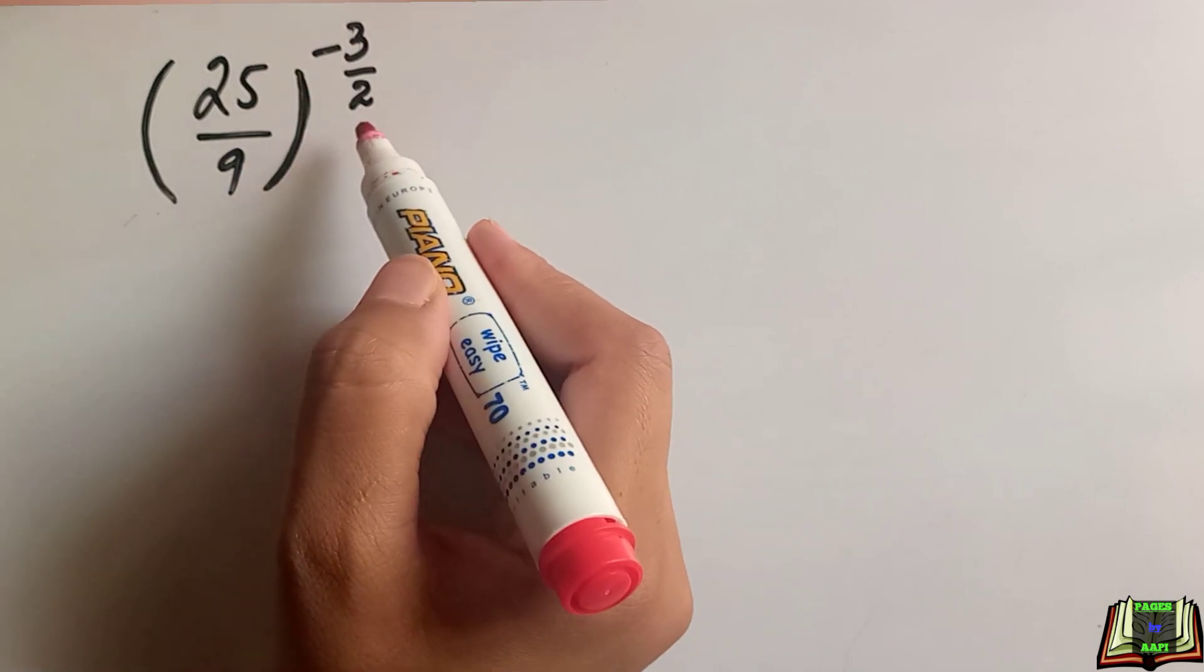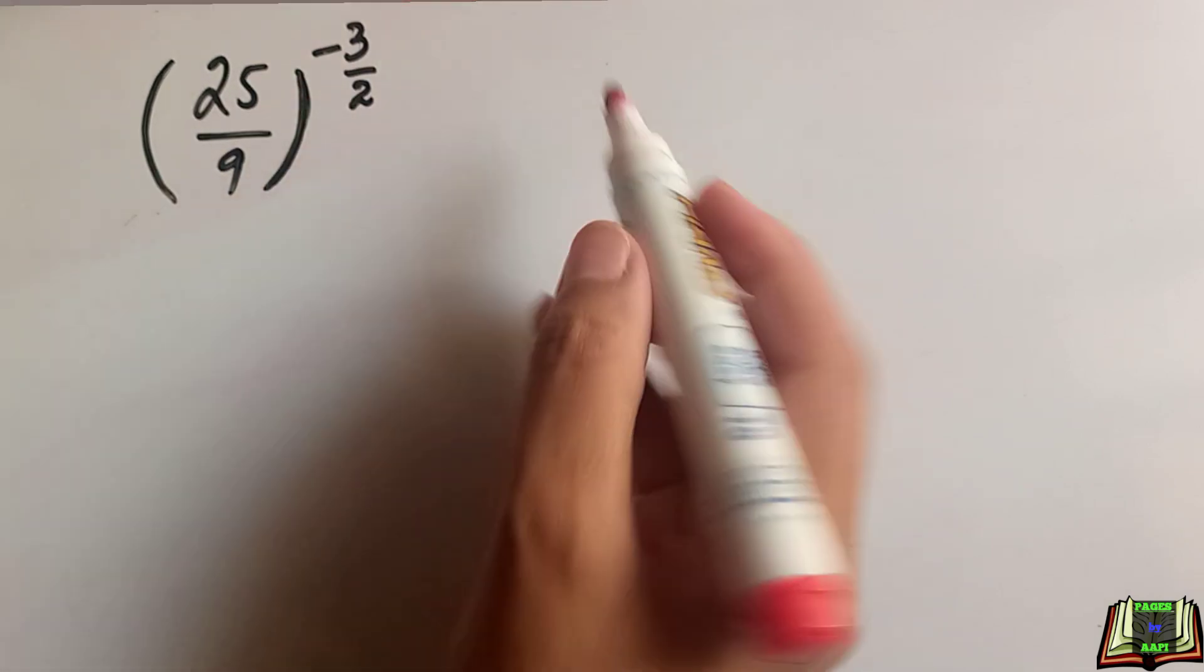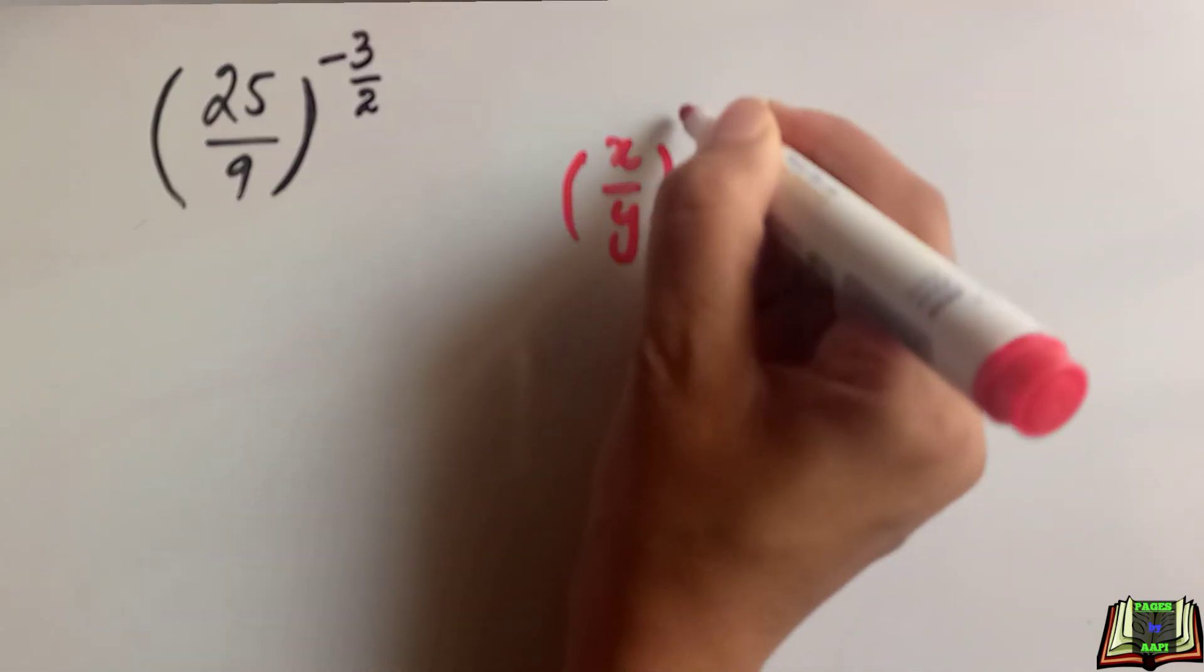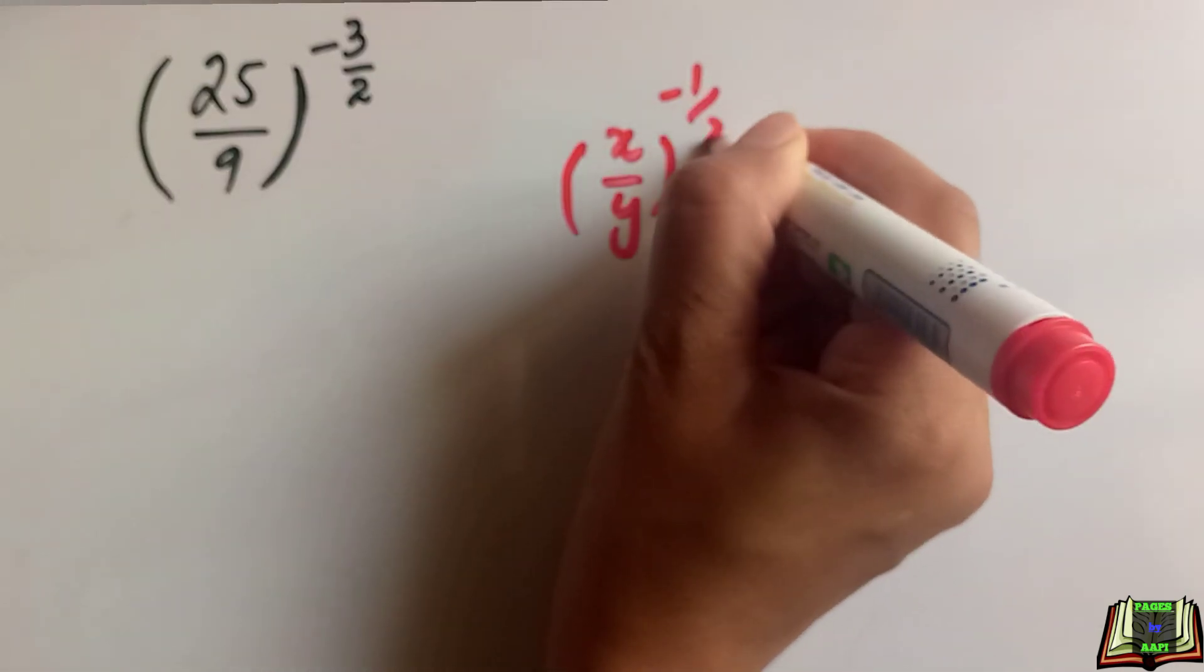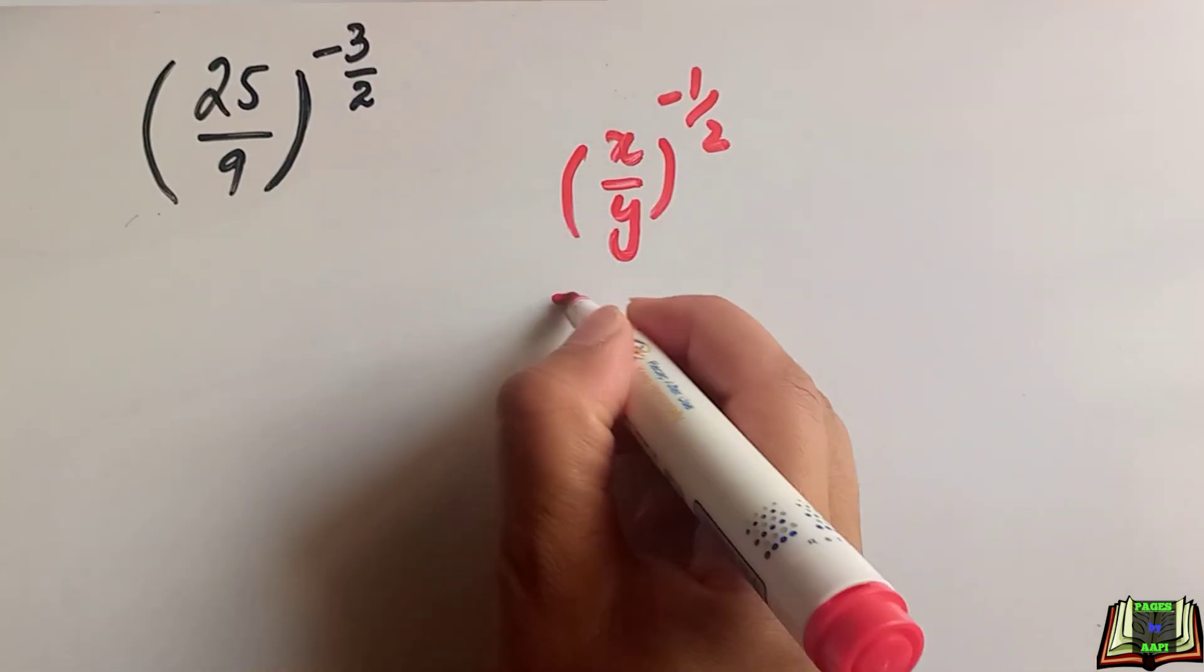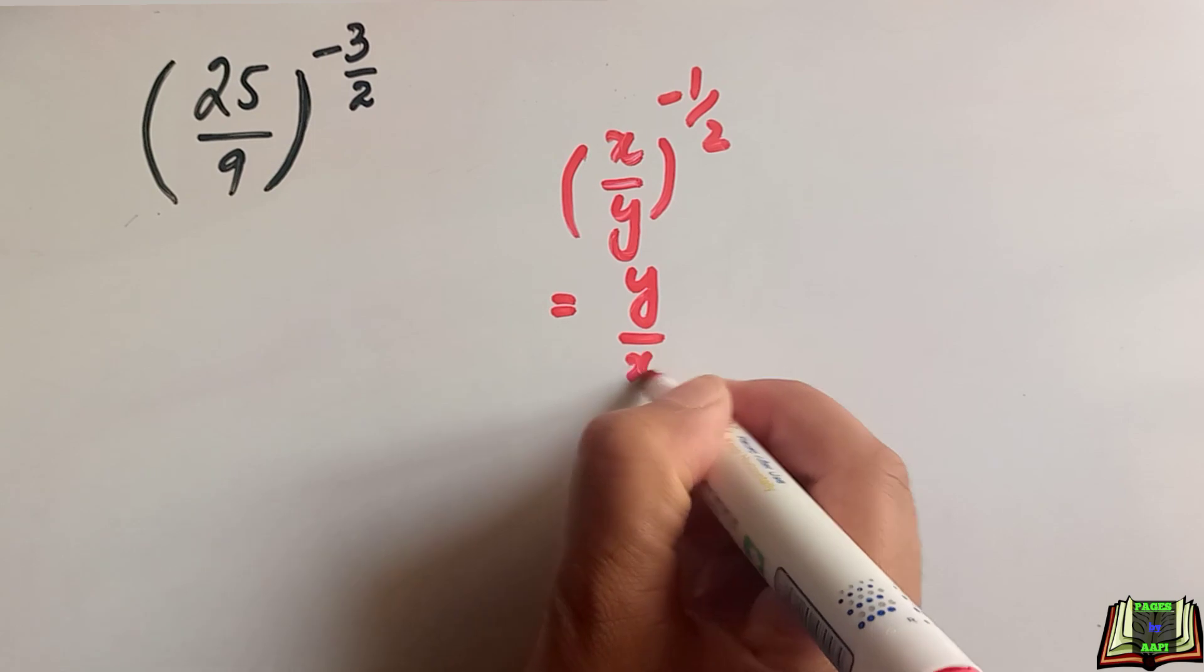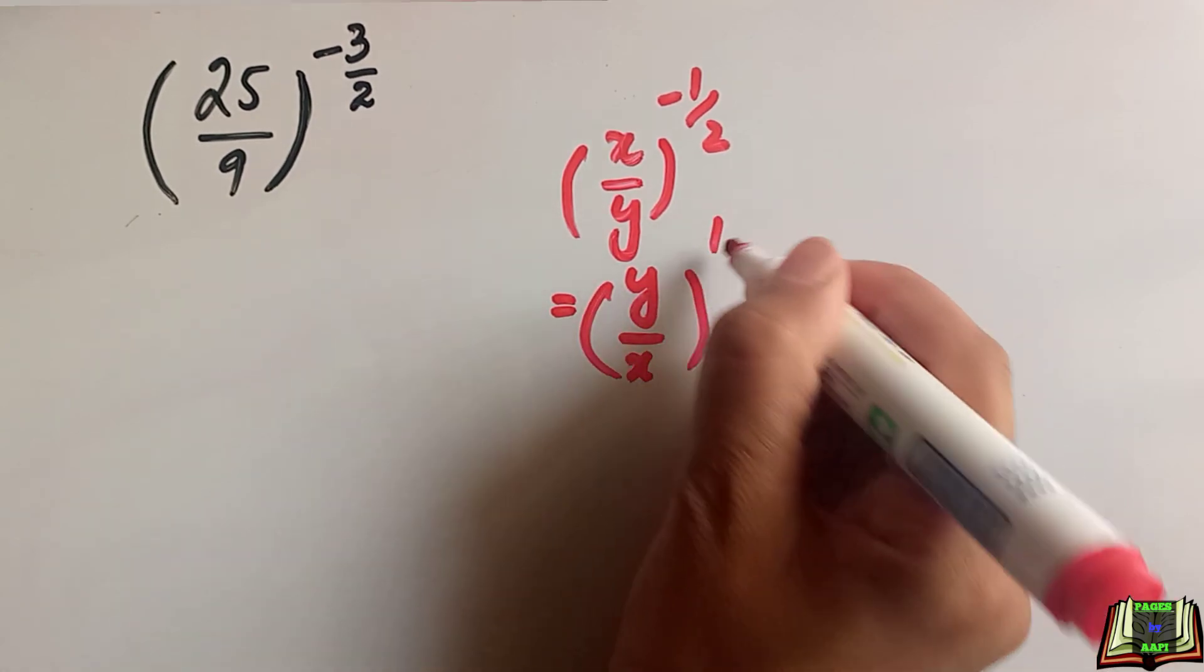For that we know if any value x over y has power minus 1 over 2, to change this negative power into positive we take the reciprocal so it can be written as y over x to the power 1 over 2.